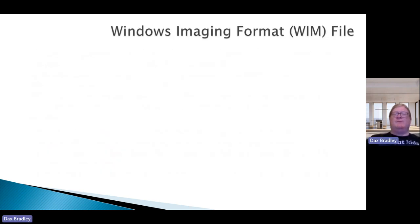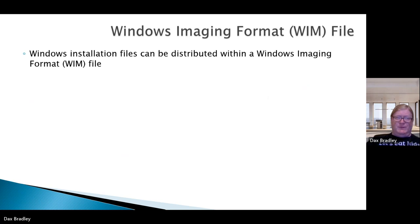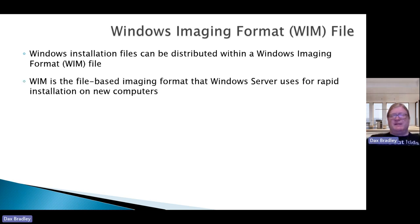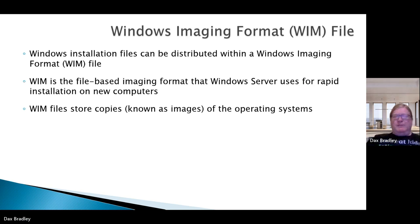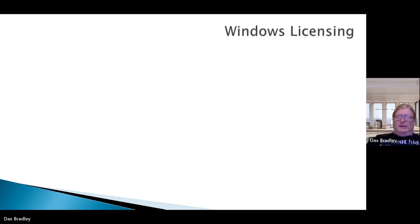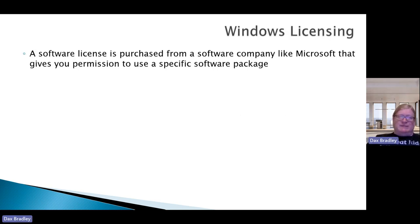The WIM is a Windows Image Format file. Windows installation files can be distributed within a Windows imaging system. The WIM is a file-based imaging format that Windows Server uses for rapid installation on new computers. WIM files store copies — called images — of the operating system.